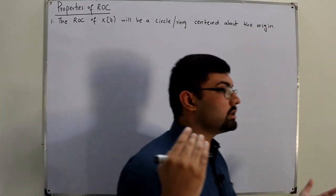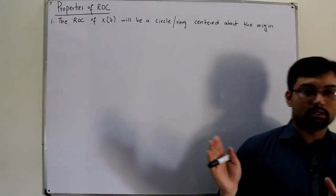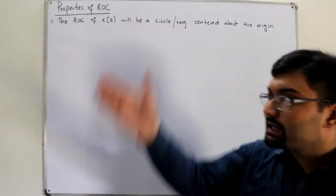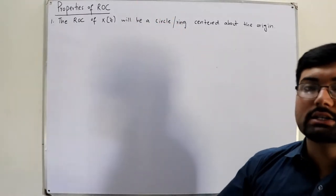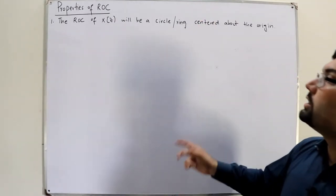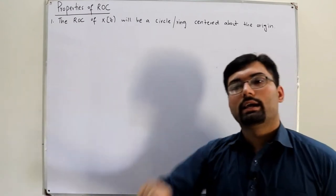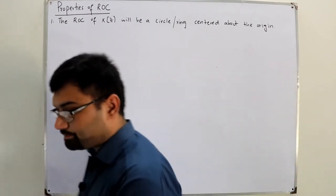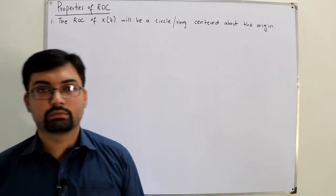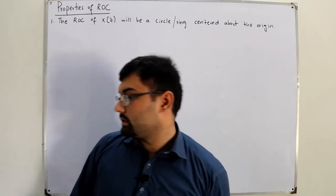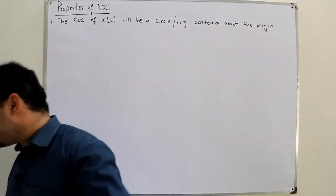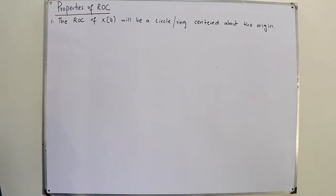We will be relating it to the Laplace transform, which is the continuous-time counterpart. Over there you had straight lines parallel to the jω axis, whereas here you have circles in the Z-plane and the center of the circle is always the origin. You have a circle as a reference — sometimes the ROC is outside the circle, sometimes inside.